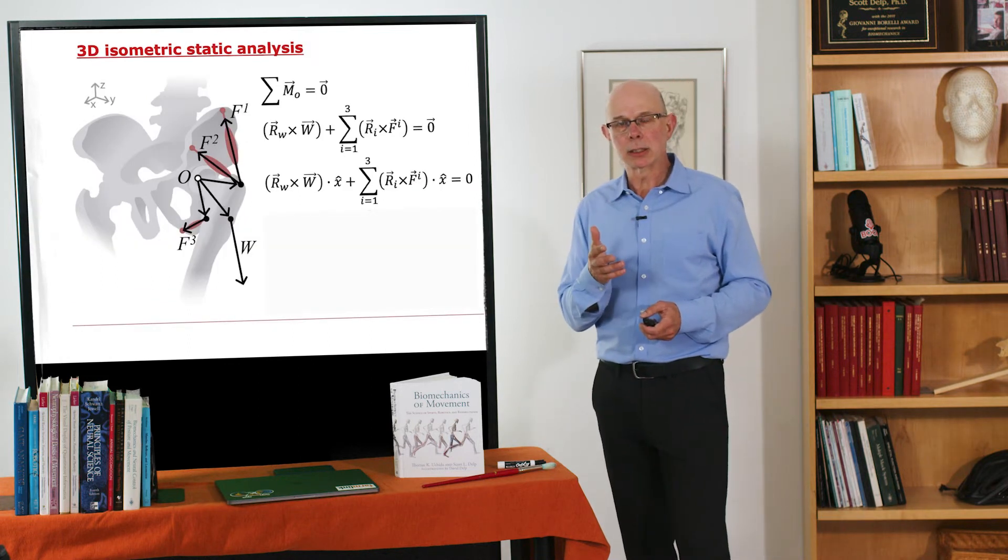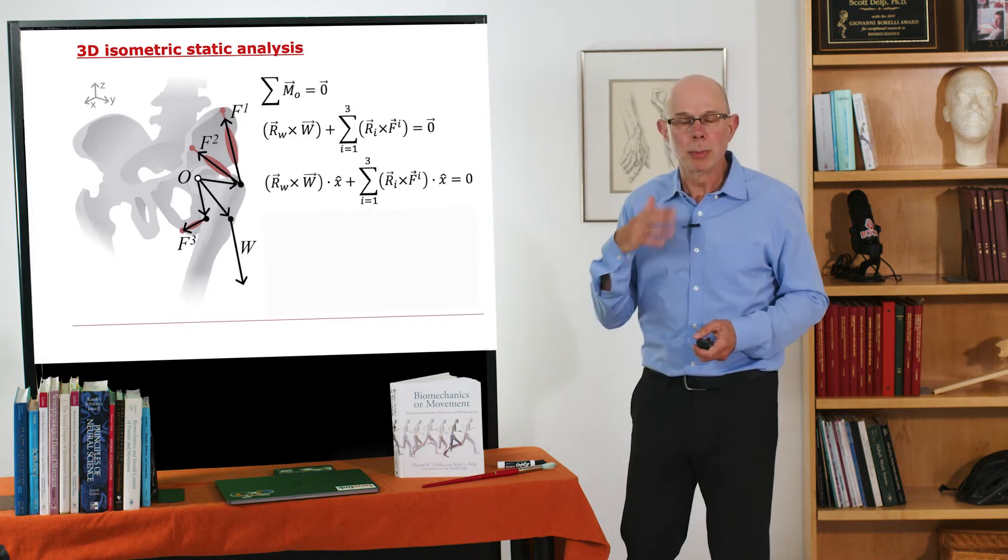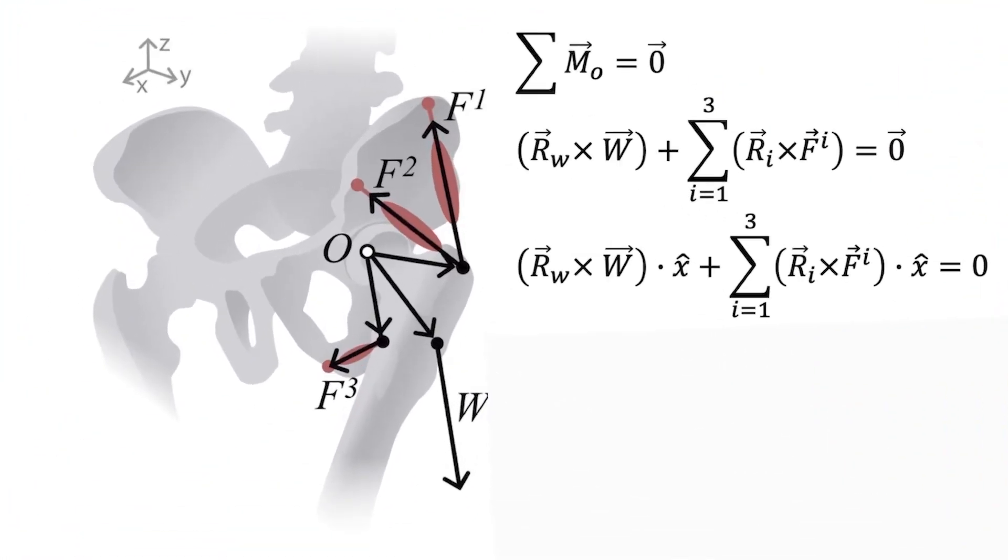So that's a 2D analysis. What about a 3D analysis? So I'm showing the hip here and two muscles in this situation. Now we've got one moment equation. The sum of the moments is going to be equal to zero. So again, we're assuming this is a static situation. Accelerations are zero. And now we can write one vector equation. This r cross w plus the sum of these r cross f's is equal to zero. So this r cross w is some external load. And this sum of the r cross f's is the various muscles.